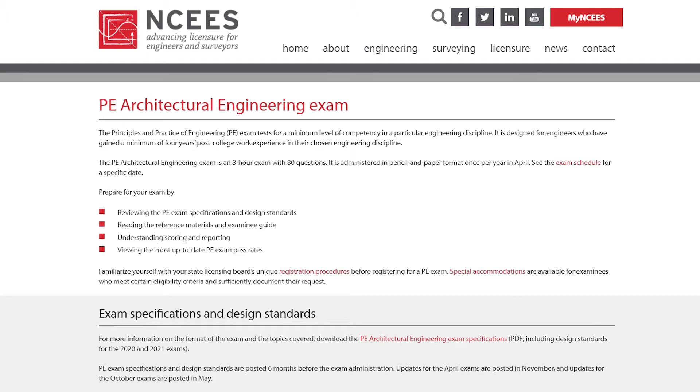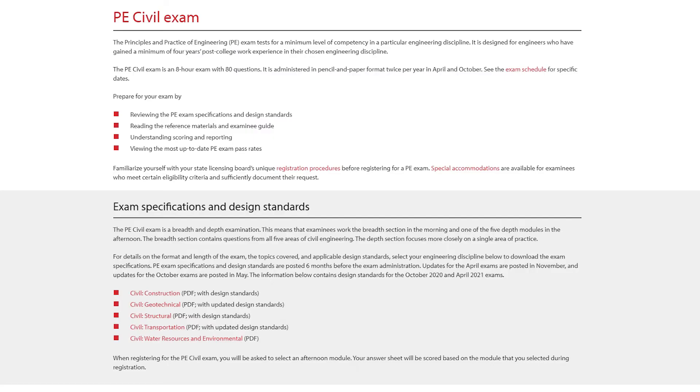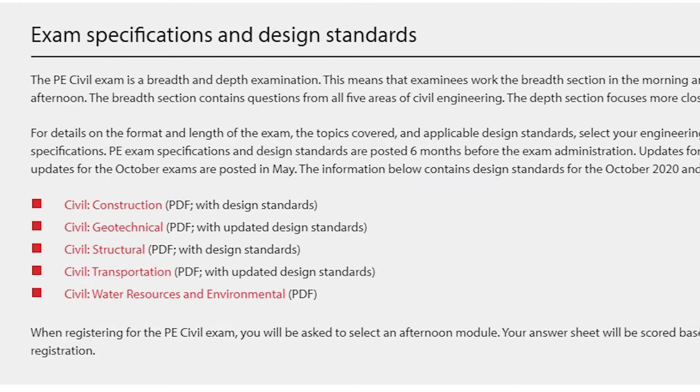However, for the civil exam, it is a little different in that the PE civil exam is a breadth and depth examination. This means that examinees work in the breadth section in the morning and then one of five depth modules in the afternoon, depending on which they choose to take. The breadth section contains questions from all five areas of civil engineering, where the depth section focuses more closely on a single area of practice. When you click on the civil discipline, you'll be able to see the five different civil depth exam options: construction, geotechnical, structural, transportation, and water resources and environmental. You can then click on the depth exam that you plan to take and find that exam's specifications.